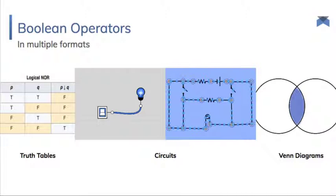So this is more or less what we're looking at. Looking at a Boolean operator, which could be displayed via truth table, like on the far left, through circuits, or circuit type diagrams, like in the middle, or on a Venn diagram on the right.